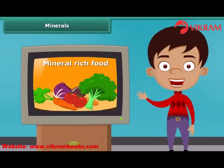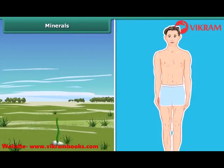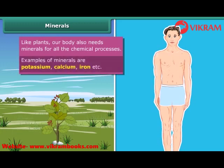You might have seen many advertisements of mineral-rich food items. Now let's know why they are so important. Plants need minerals for growth. Besides this, a body also requires minerals in small quantities for all the chemical processes. Potassium, calcium, iron, etc. are some common examples of these minerals. Let us know more about the sources and the role of these minerals using the next table.